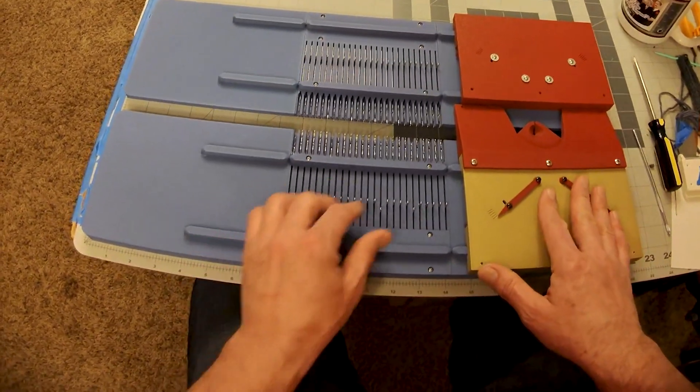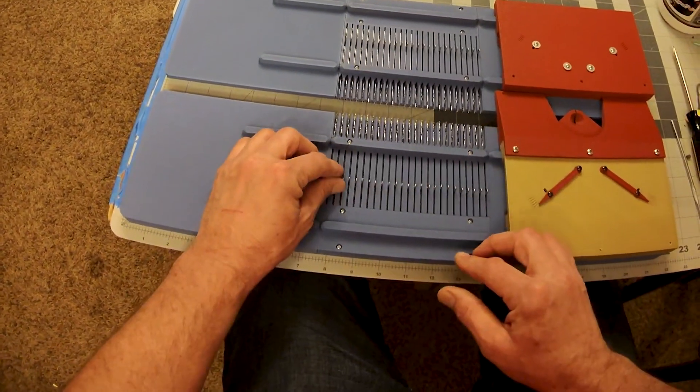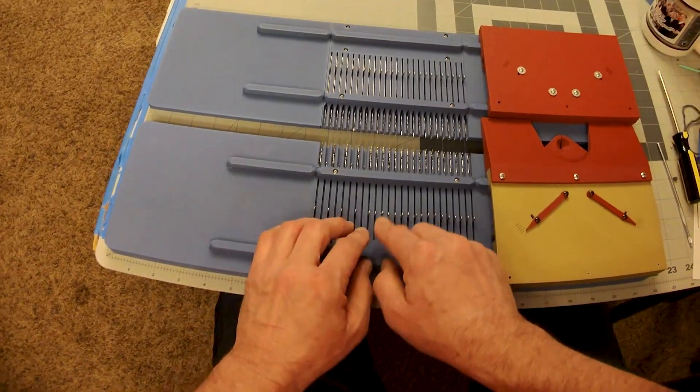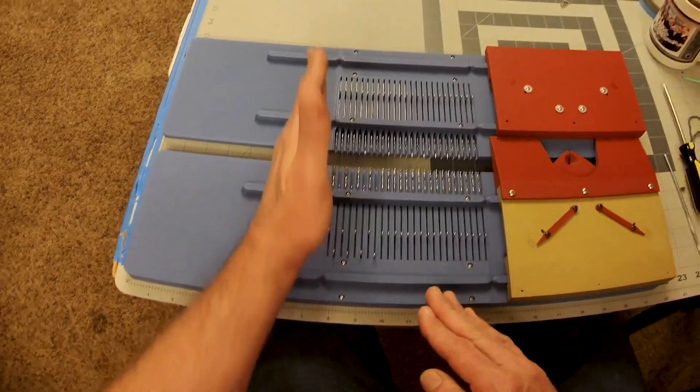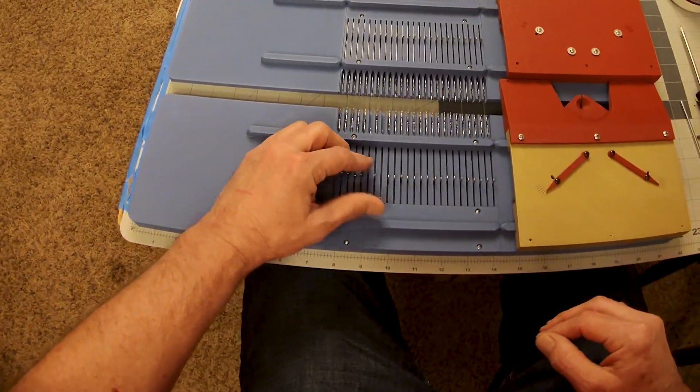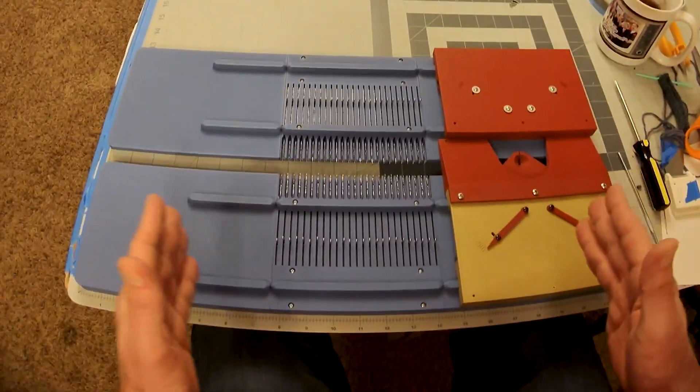But for now, for this initial test, what we're going to do is we're going to knit, but we're going to put alternating needles in the non-knitting position. So this needle will knit, and then that one, and then that one—essentially like a rib.